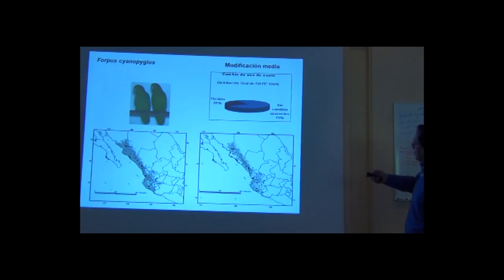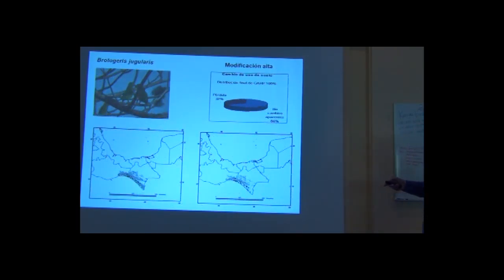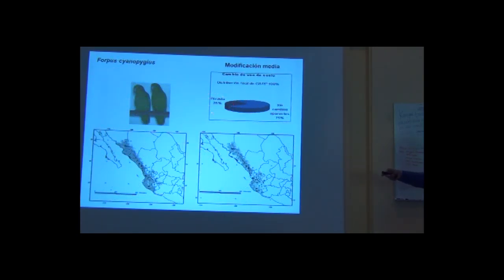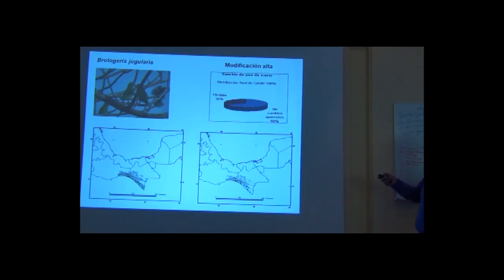In another example, the changes are larger. Looking at the hypothetical distribution of this parrot species and the distribution after removing all unsuitable areas, around 25% of the area is lost due to land use changes in the region. In a further case, this is the projected original distribution — the amount of distribution that remains after removing non-suitable areas shows that this species has suffered about 32% loss of its original distribution area due to land use changes alone.